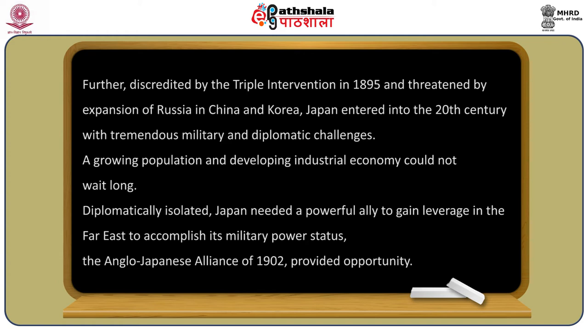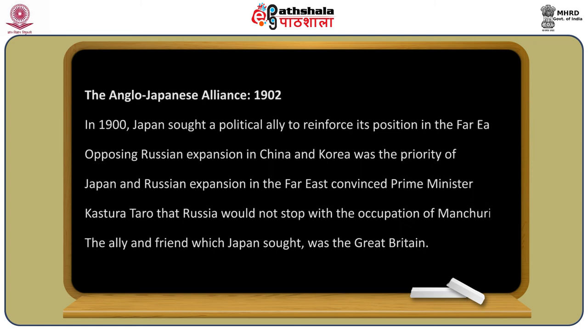Discredited by the Triple Intervention of 1895 and threatened by the expansion of Russia in China and Korea, Japan entered the 20th century with tremendous military and diplomatic challenges. A growing population and developing industrial economy could not wait any longer. Diplomatically isolated, Japan needed a powerful ally to gain leverage in the Far East and to accomplish its own military power status. The Anglo-Japanese alliance of 1902 provided this opportunity.